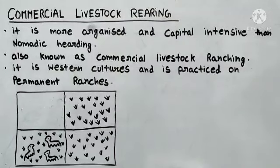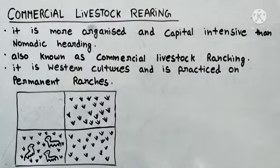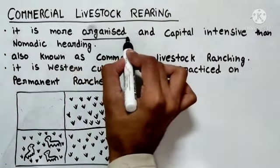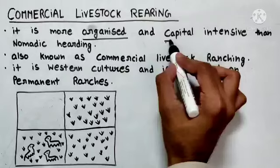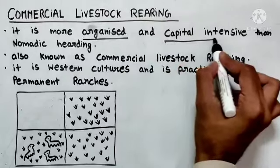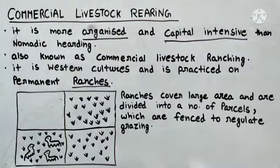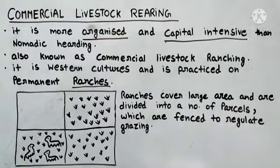Toh dekh rahe ho yeh activity kitni organized hai — pehle humne ranches kharide, phir uske andar humne pastures banaye, phir humne boundaries ki fencing ki. Aur yeh sab karne mein humein paisa bhi lagta hai, isliye yeh activity capital intensive bhi hai.